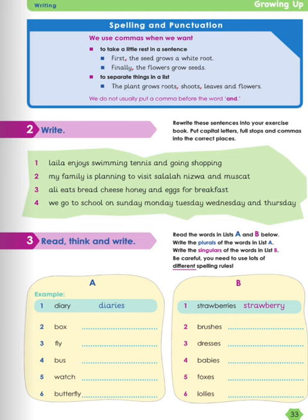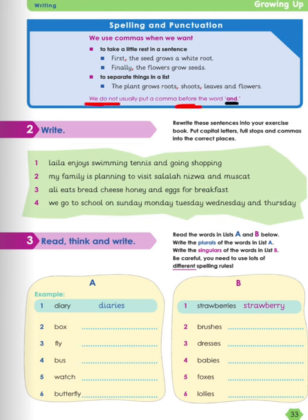Moving on to spelling and punctuation. This is very important, so focus with me. We use commas when we want to take a little rest in a sentence. For example: 'First, the seed grows a white root' — we use a comma here. And 'Finally, the flowers grow seeds' — see, it's a rest. Then we complete our sentence, but we put a comma. Also, we use commas to separate things in a list. For example: the plant grows roots, shoots, leaves and flowers. We do not usually put a comma before the word 'and'.